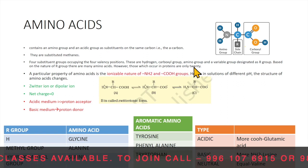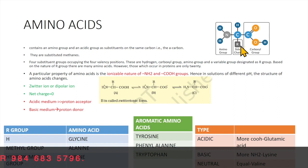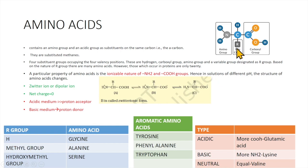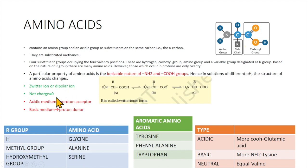Those amino acids which occur in proteins are only 20. Based on the R group: if R is H, the amino acid is called glycine; if R is a methyl group (CH3), it is called alanine; if R is a hydroxymethyl group (CH2OH), it is called serine. There are also aromatic amino acids — three have been specified: tyrosine, phenylalanine, and tryptophan. Glutamic acid, glycine, and valine are examples of acidic, basic, and neutral amino acids respectively.